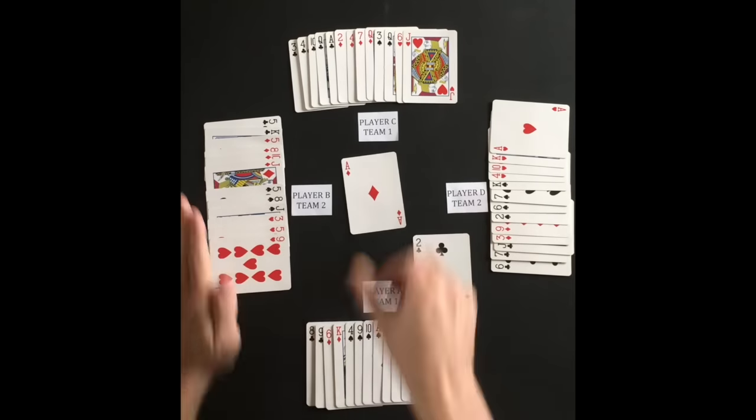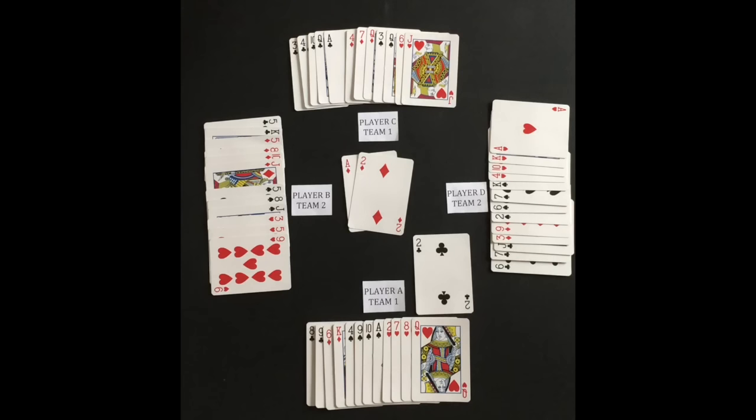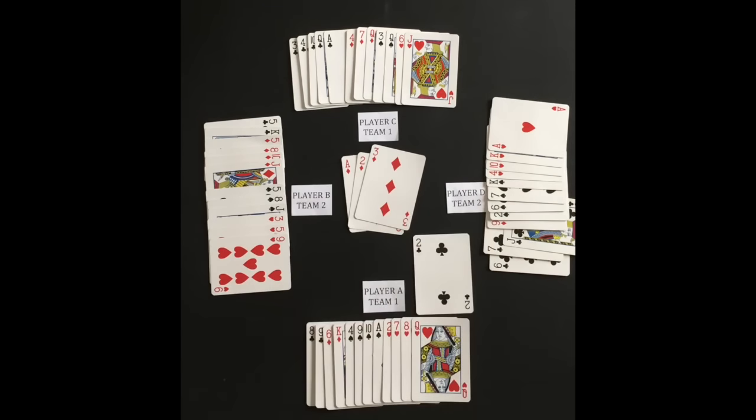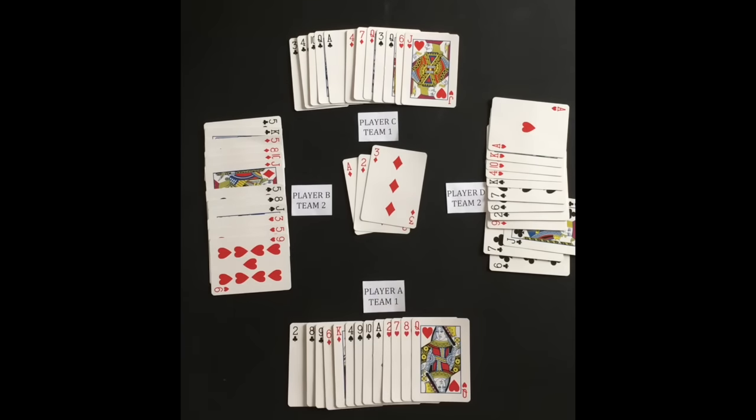The player left of the dealer will lead the first trick. Each player must play a card in the same suit of the card that was led whenever possible. On the dealer's first turn he will put the flipped up card into his hand then play.